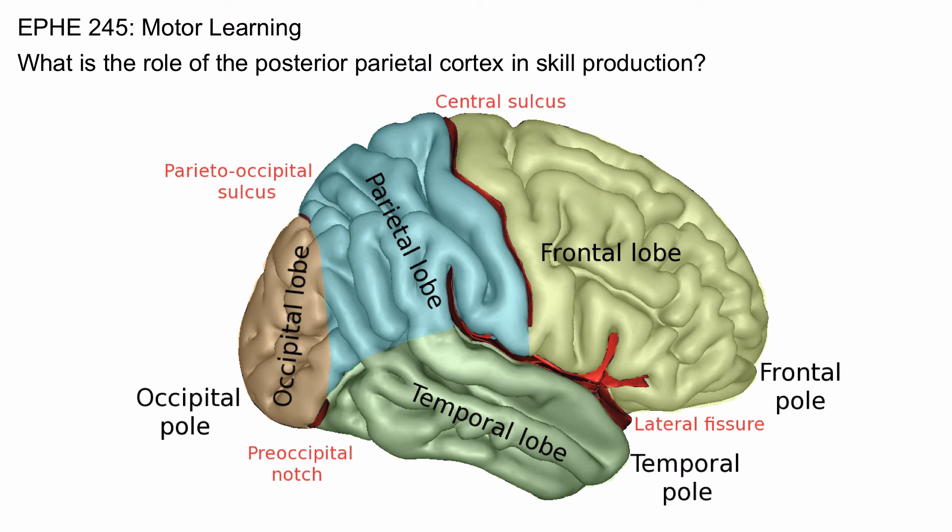So the parietal cortex and the posterior parietal cortex are busy places that basically play a role in vision related to movement production, building body representations, and working with objects.